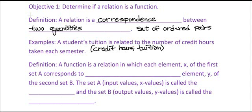Now, relations are really nothing special, just like I said, a set of ordered pairs. But then we talk about something called a function, and a function is a special type of relation. A function is a relation in which each element, x, of the first set A, corresponds to exactly one element, y, of the second set B.